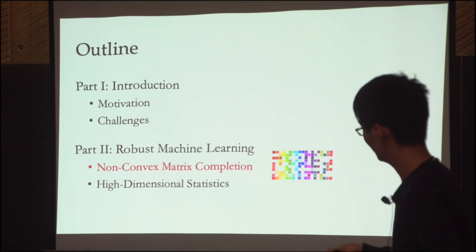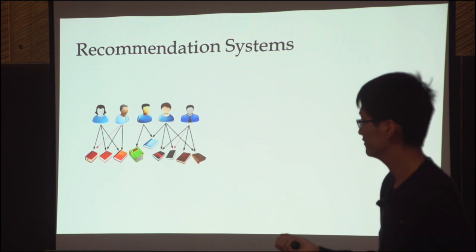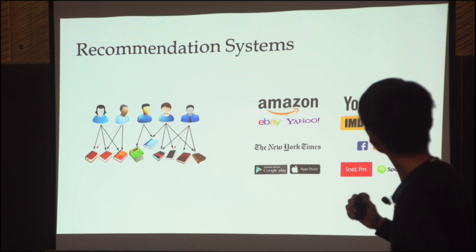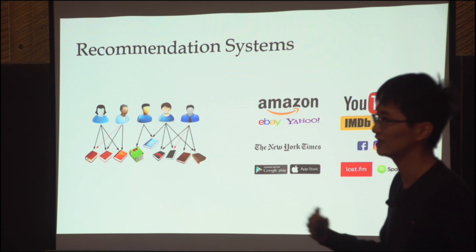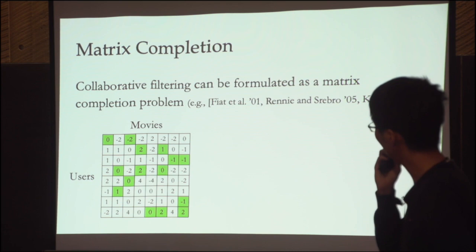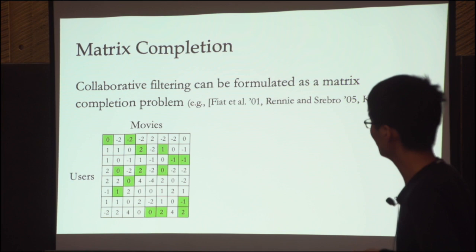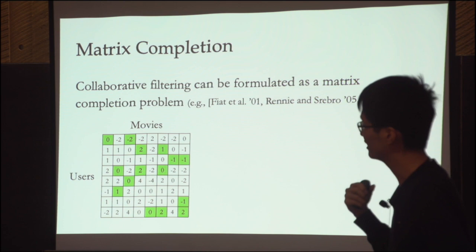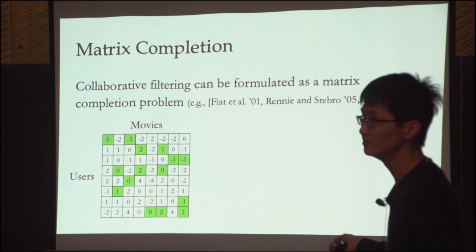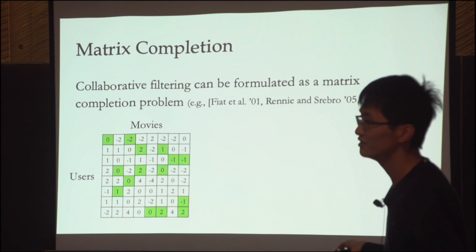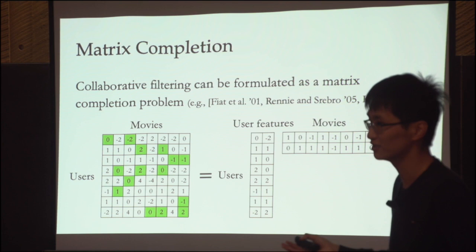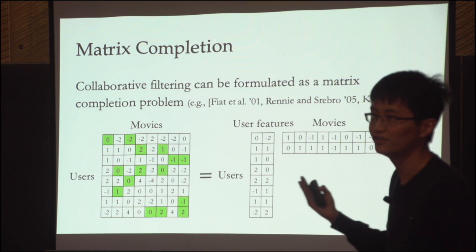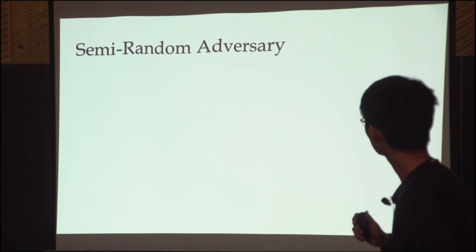We'll move on to the first problem of the talk: collaborative filtering, specifically recommendation systems. This is where websites like Amazon and YouTube recommend products to you based on your purchase and viewing history — probably one of the learning systems we interact with most often. The matrix completion approach formulates the underlying data as a low-rank matrix, which became popular during the Netflix challenge. For example, we can think of this matrix as users' ratings of movies, say between -5 and 5. We only observe the green entries and want to infer the white entries. We believe the matrix is low rank because each movie has certain features, each user has preferences for those features, and the number of features is much smaller than the number of movies.